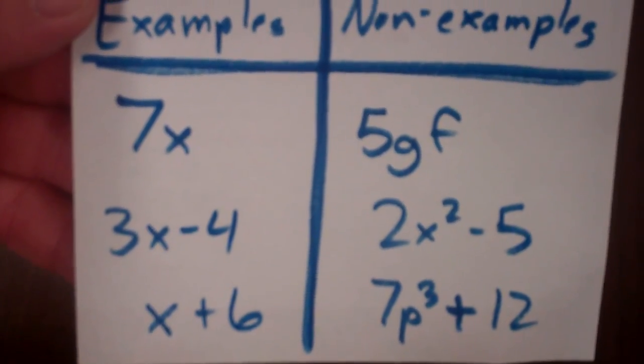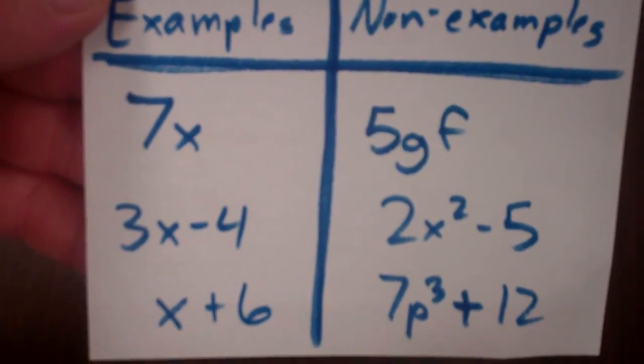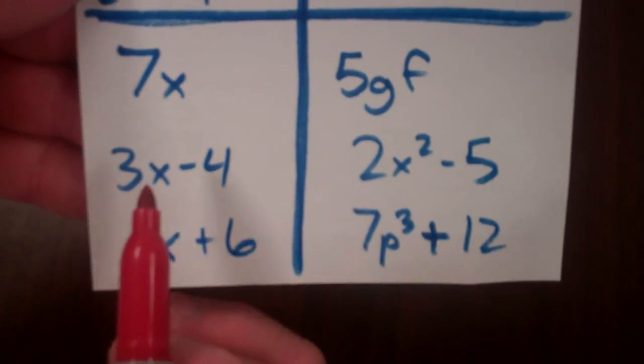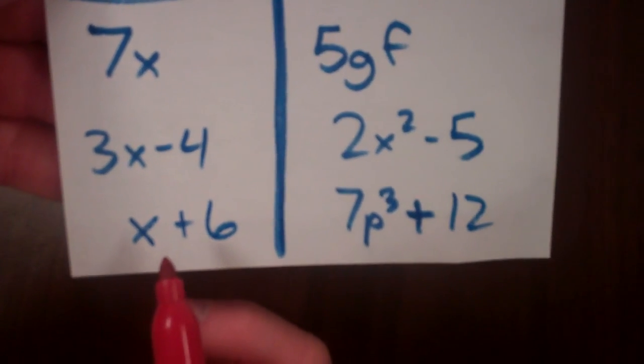So I gave you some examples and some non-examples. Examples like 7x. Notice the variable is to the first power, and I understood 1 right there, to the first power. Here I have a first power. Here I have a first power.